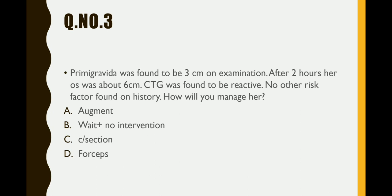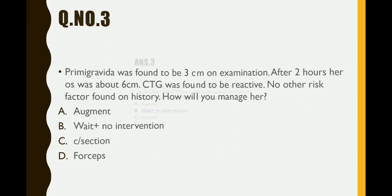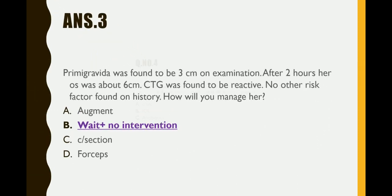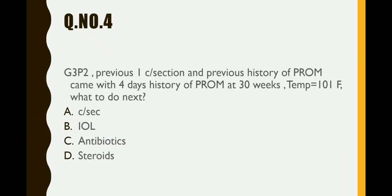Question number 3: a primigravida was found to be 3 cm dilated on examination; after 2 hours she was 6 cm dilated. The CTG was reactive and no other risk factors were found on history. Since everything is progressing well — 3 cm to 6 cm in 2 hours — the correct management is to wait with no intervention. B is the right answer.